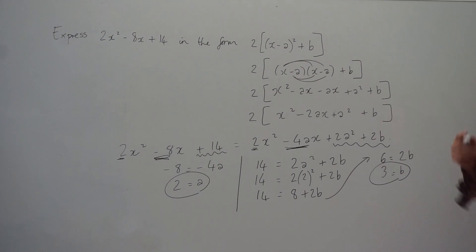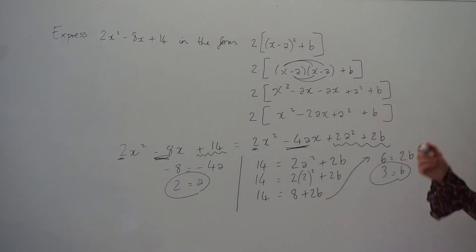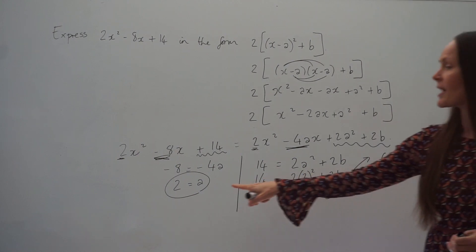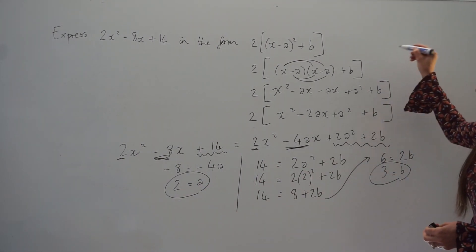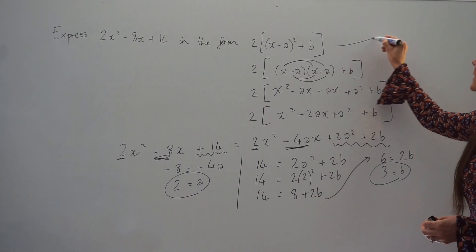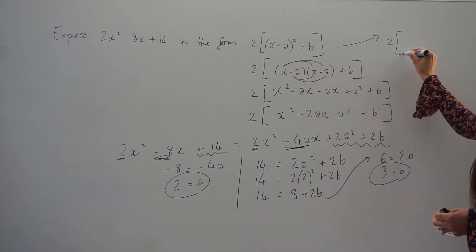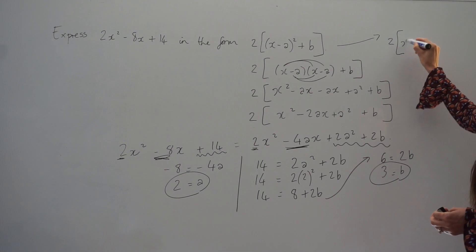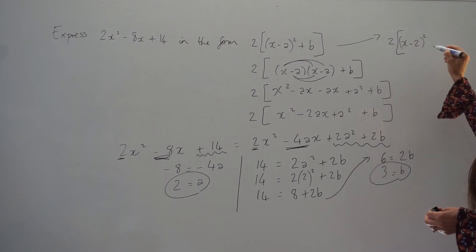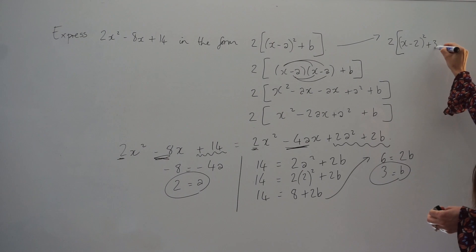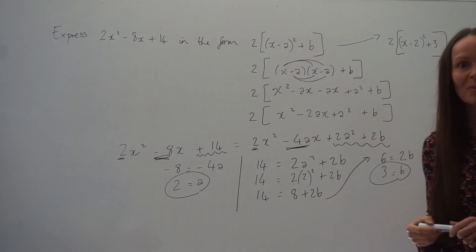So at the end, you just write it in the form they've asked for — that means replacing a with 2 and b with 3. So we have 2, then in square brackets, (x minus 2) squared, and then plus 3. So that is the final answer to the exam question.